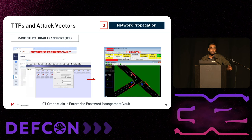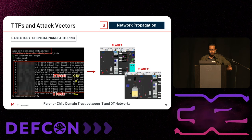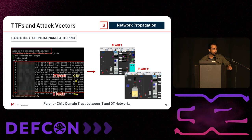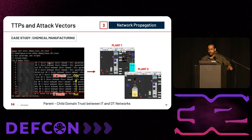That screenshot shows a successful remote desktop connection to an ITS server for a traffic control or traffic light monitoring system. Another example shows a segmentation flaw using domain trust between IT and OT — the IT domain is actually superseded as the root domain for OT domains across multiple DCS. Our team was able to use compromised credentials in the root IT domain to gain access to child domains from multiple plants across the globe.